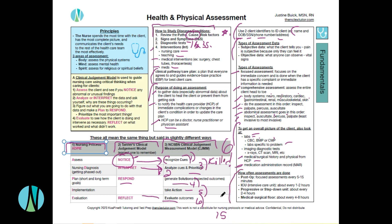Typically, assessments are done in the post-op area with very focused assessments every five to fifteen minutes. The ICU does assessments every one to two hours. A progressive or step-down unit is every two to four hours. And a med-surg floor is every four to eight hours — though I would say eight hours would probably be too long, so more like every four hours.